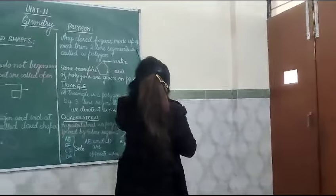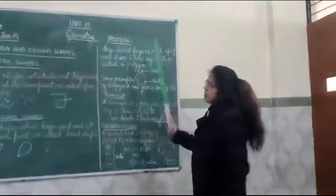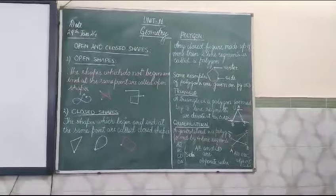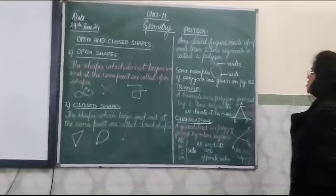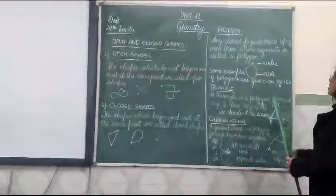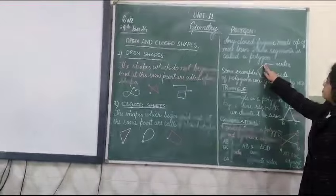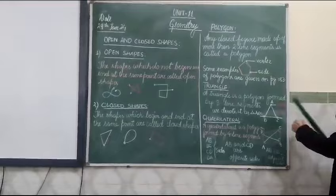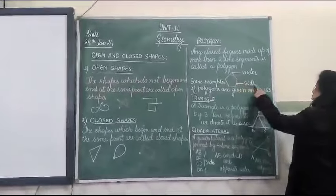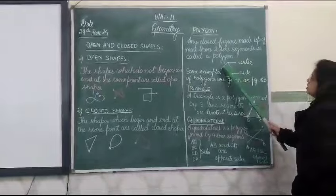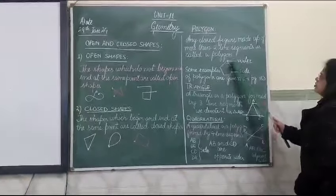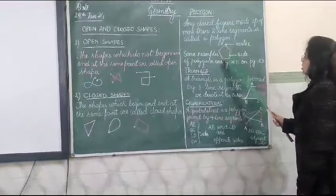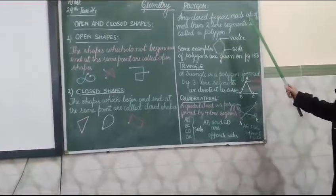Now come to the next topic: polygon. A polygon is any closed figure which is made up of more than two line segments. You can see here is an example of a polygon — it is made up of five line segments. The line segments forming this figure are known as sides. And the point where two line segments meet is known as a vertex. So these line segments are known as the sides of the polygon.